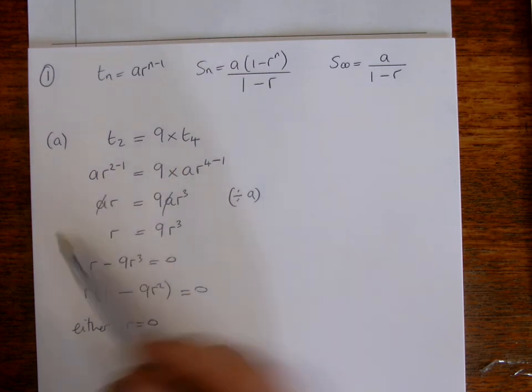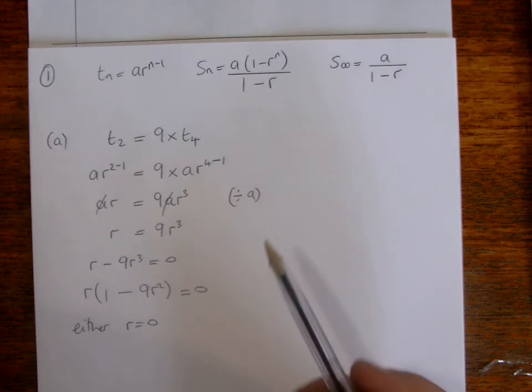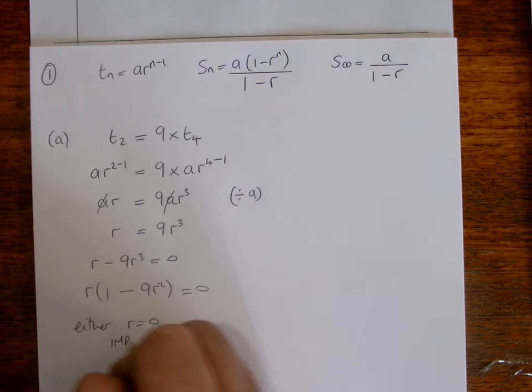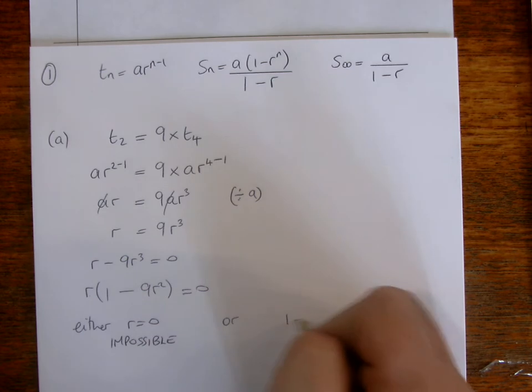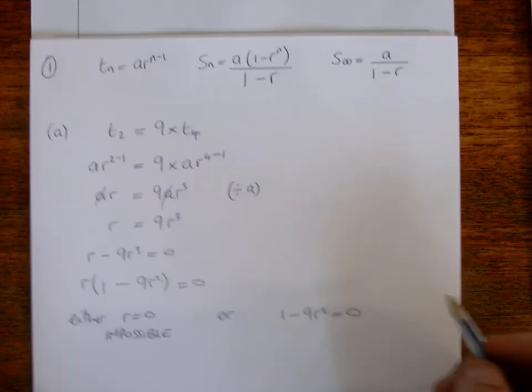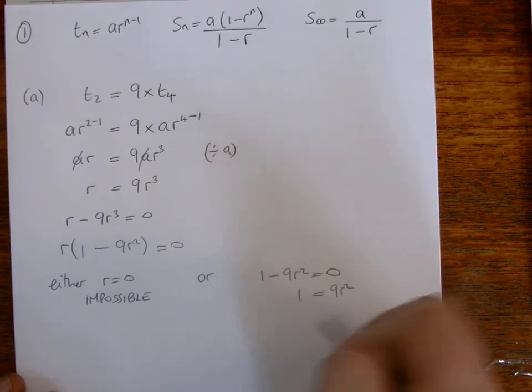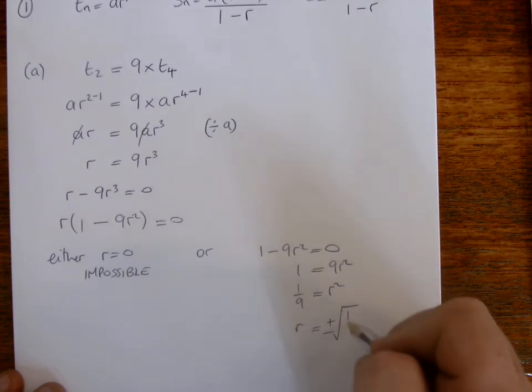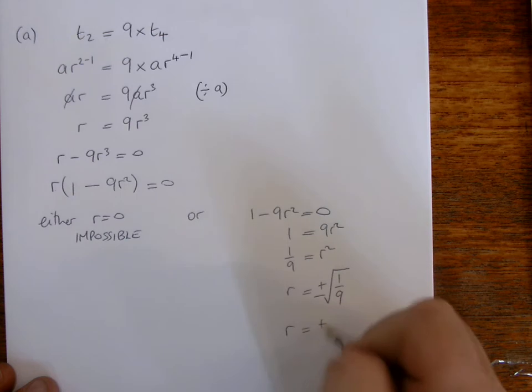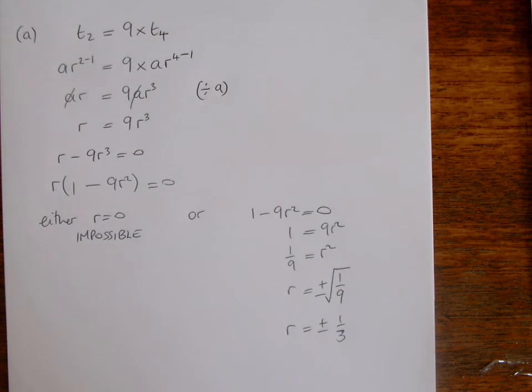Because the common ratio would be zero. You times it by zero, so you wouldn't have a series, so this is impossible. Or you'd have one minus nine R squared equals zero, which means then that one will equal nine R squared. So then one over nine will equal R squared. So then to get R, you've got to square root. And remember with square root, you've got to do plus or minus. So square root that there, which means R would be plus or minus one third. So those are the two possible values there for R.